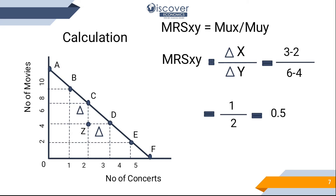The marginal rate of substitution equals marginal utility of X divided by marginal utility of Y, which is the change in X divided by the change in Y. Note that here both variables are quantities — there is no price involved, unlike the slope of the budget line. So it is one commodity divided by another. The change in X is 3 minus 2, and the change in Y is 6 minus 4, giving us 1 divided by 2, which equals 0.5. This means we give up two movies to gain just one concert.